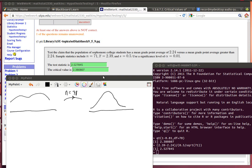Here we're looking at a hypothesis testing problem from WebWork. Somebody's making a claim that the mean is equal to 2.24.